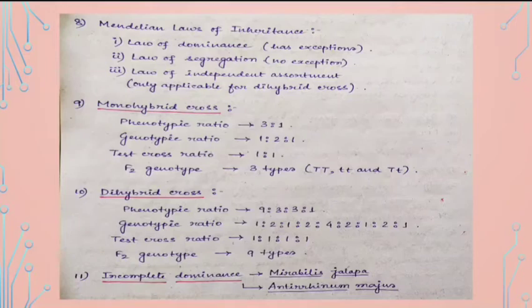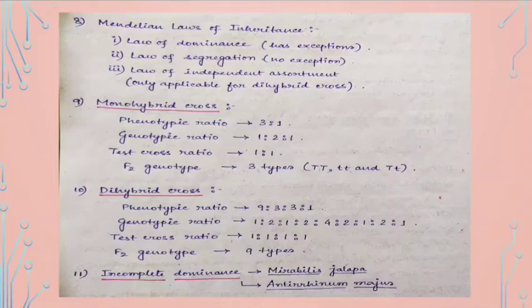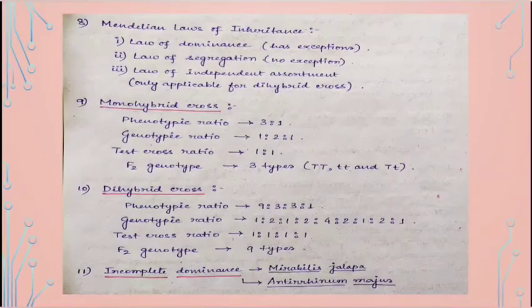In a monohybrid cross, the phenotypic ratio is 3:1 and the genotypic ratio is 1:2:1. The test cross ratio is 1:1, and the F2 genotype is of three types: TT, tt, and Tt. In a dihybrid cross, the phenotypic ratio is 9:3:3:1, the genotypic ratio is 1:2:1:2:4:2:1:2:1, the test cross ratio is 1:1:1:1, and the F2 genotype is of nine types.